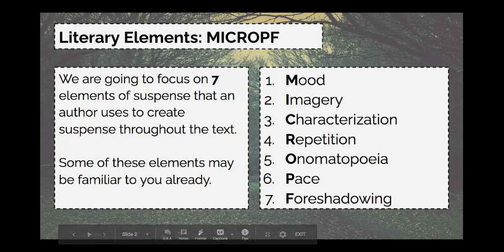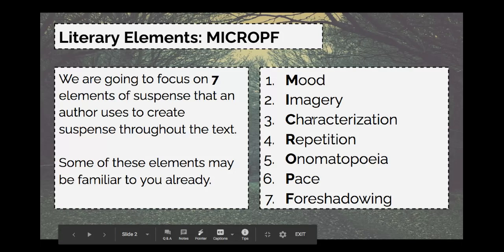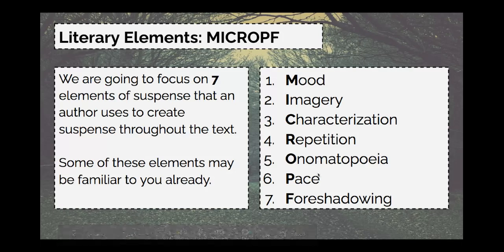There are seven elements we're going to be focusing on — seven elements of suspense that an author can use to create suspense throughout the text. At the top it says literary elements, and there's an acronym: MY CROP. Each letter in MY CROP represents one of our seven elements. Our first one is Mood, then Imagery, Characterization, Repetition, Onomatopoeia, Pace, and Foreshadowing.